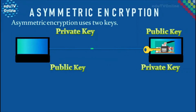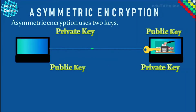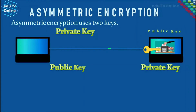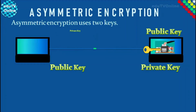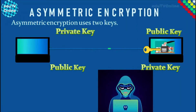The first key can be sent to anyone from whom the user wants to receive an encrypted message. As a result, this key is called a public key. The second key is kept secret by the user, so that only they know it. As a result, this key is called a private key. As long as the private key is kept secret, the encryption is extremely difficult to break.